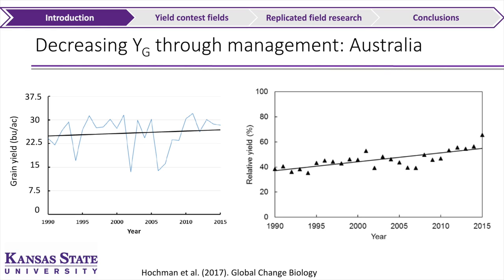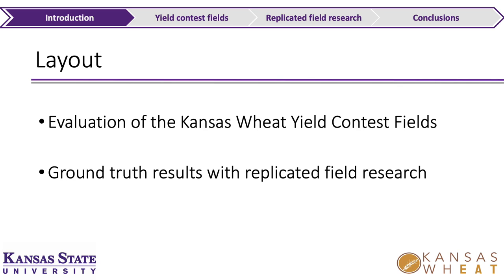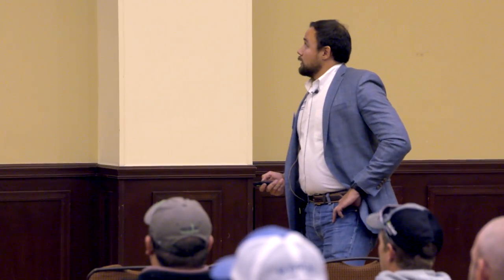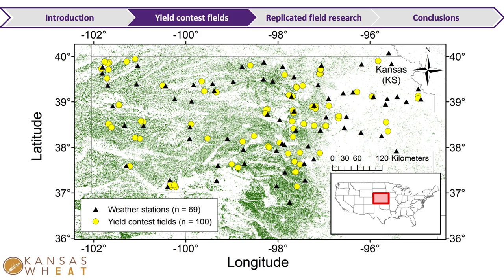In this presentation, I want to first look at farmers in the wheat yield contest — what they're doing and what management practices have been associated with yield among all those fields — and then ground-truth some of those results with research data. Looking at this map, wheat area is shown in green, and the yellow points are fields entered in the Kansas wheat yield contest over the last seven years, harvest years 2010 through 2017 — a total of 100 fields.